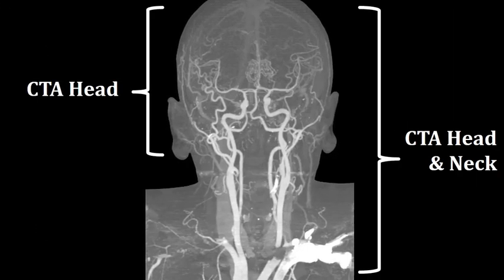Here is an example of the different scan parameters between a CTA head and a CTA head and neck. A CT angiography study of the head really does just include the vessels of the brain. And a CTA angiography study of the head and neck will include all of the vessels of the brain as well as the vessels that feed blood up into the brain, like the internal carotid arteries as well as the vertebral and basilar arteries.